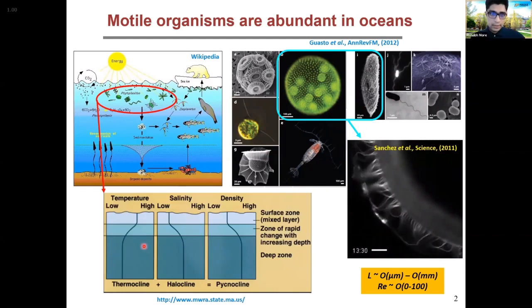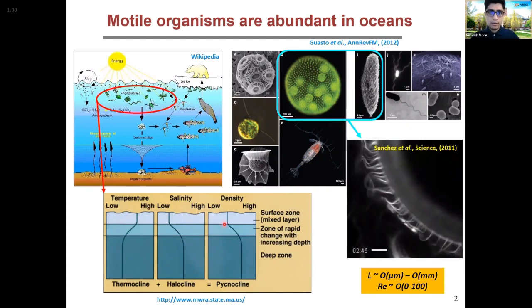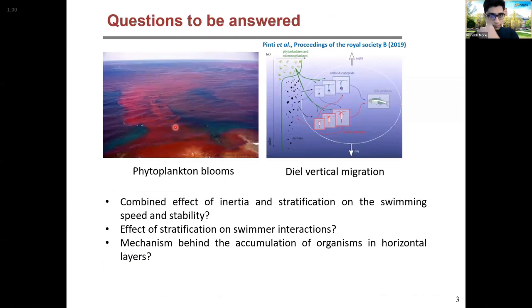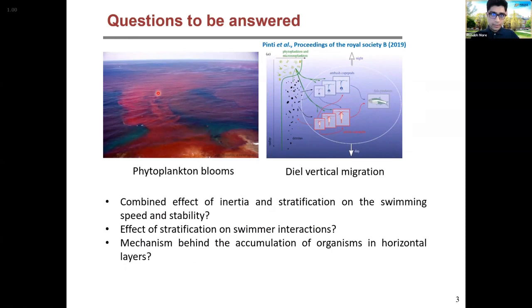Another important characteristic of this upper layer is the presence of a vertical density gradient. It can be due to the presence of a vertical temperature gradient, salinity gradient, or a mix of both. So it becomes important to see how this stratification and also the inertia affects the motion of these organisms in these upper layers. It has been seen that there are large-scale phytoplankton and algal blooms which scale a few kilometers horizontally.